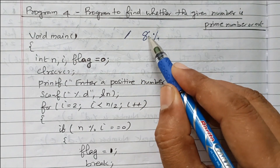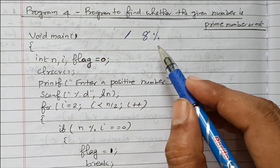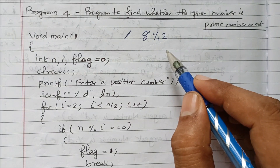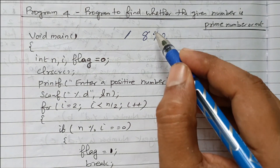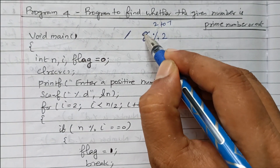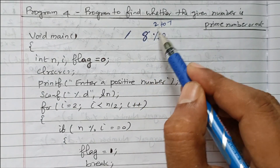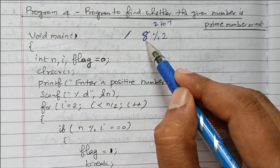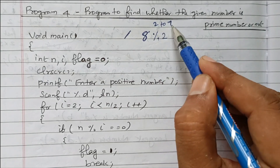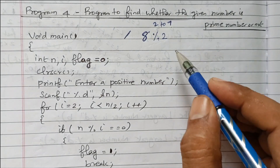Now we take the example number 8. We cannot divide by 1, because all numbers are divided by 1. So we start with 2, and go up to 7 — that is, from 2 to n minus 1 (8 minus 1 = 7). We also cannot divide by 8 itself, since 8 divided by 8 is always exact. So the range is 2 to 7.